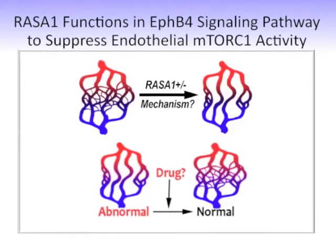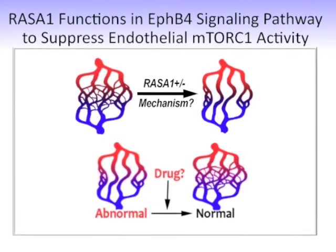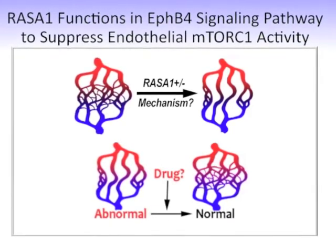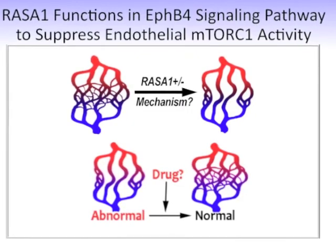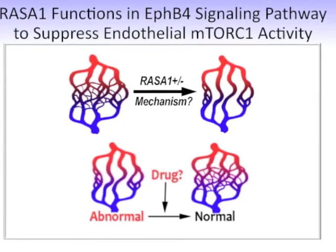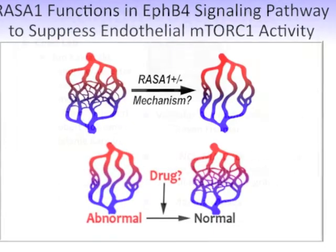What we did was look at RASA1 genetic mutations that cause arteriovenous malformations and try to figure out what is the mechanism driving this defect. In my first slide, I'm showing the normal blood vasculature and how it is intervened by a capillary bed. The capillary bed is the site of action because that's where oxygen and nutrients are exchanged for waste materials.